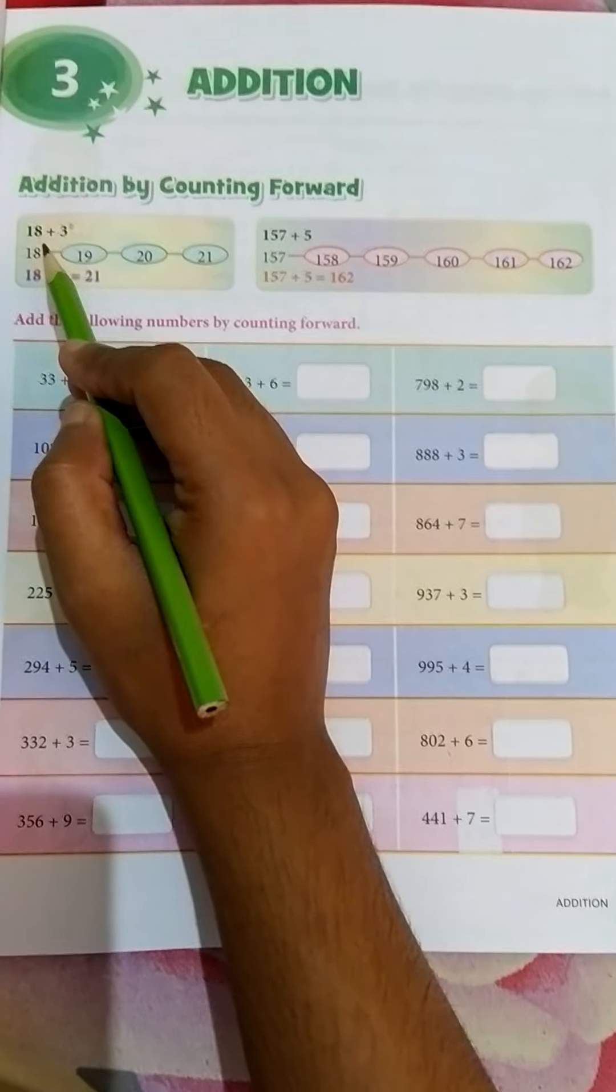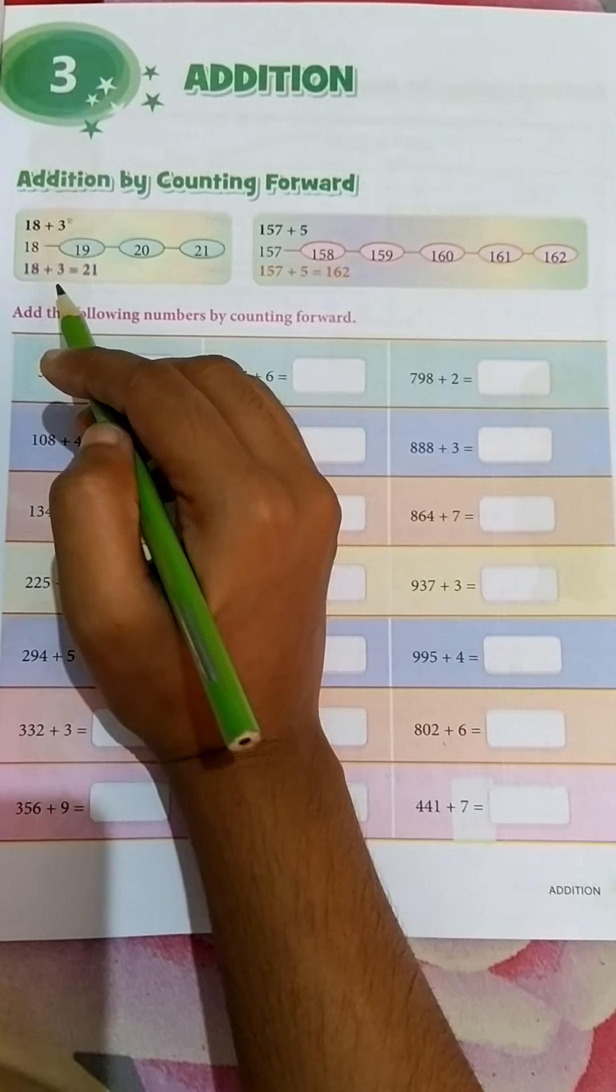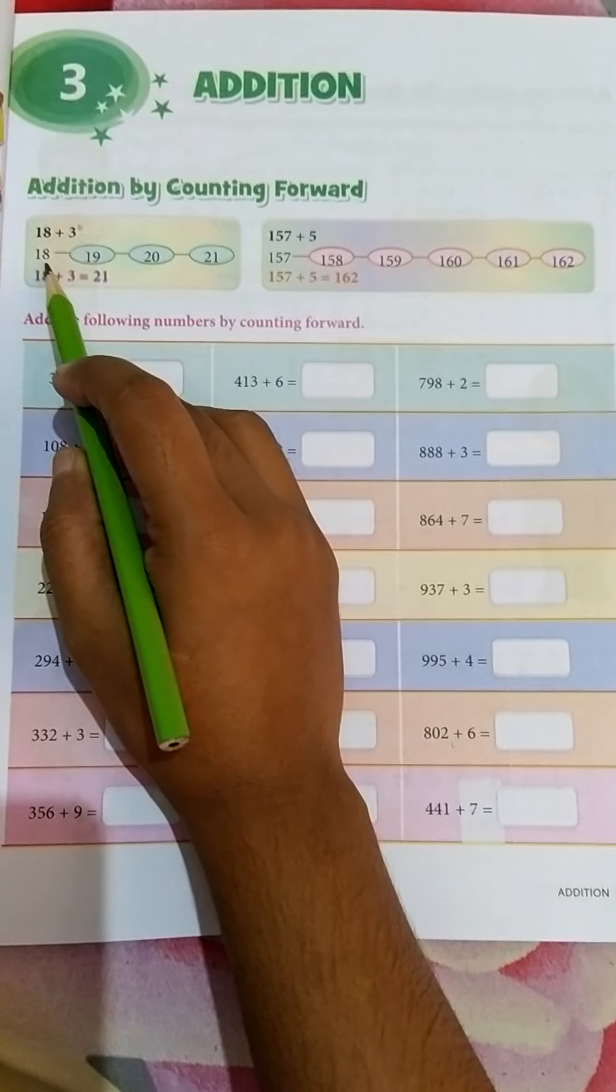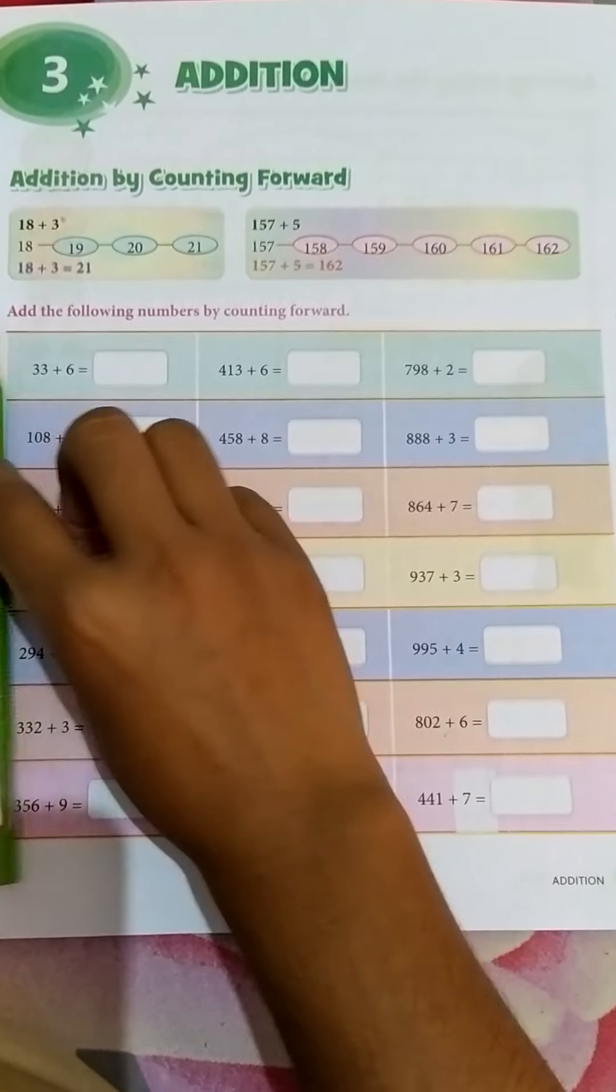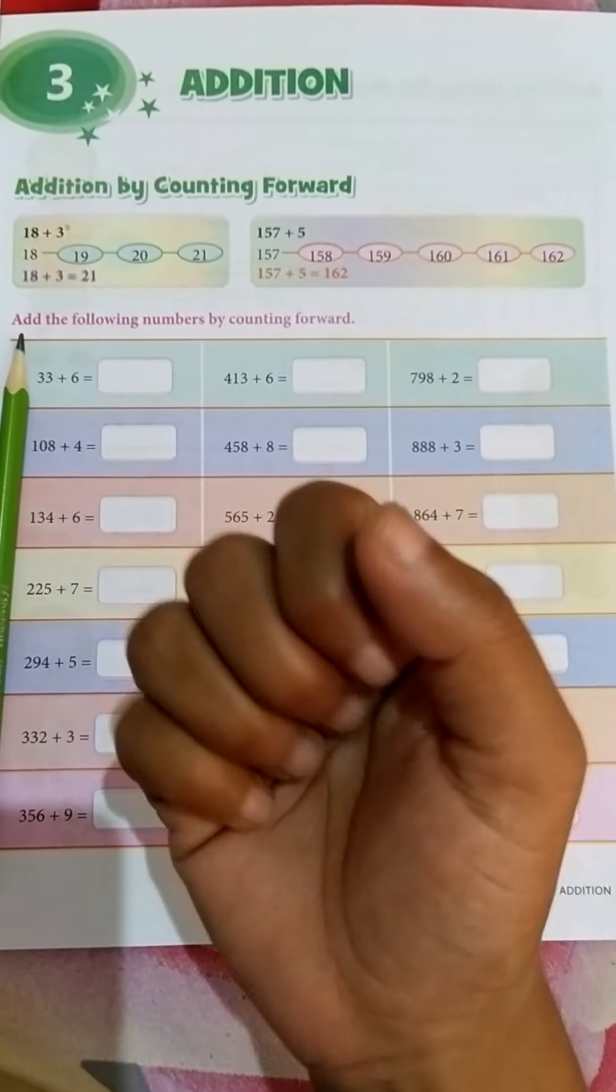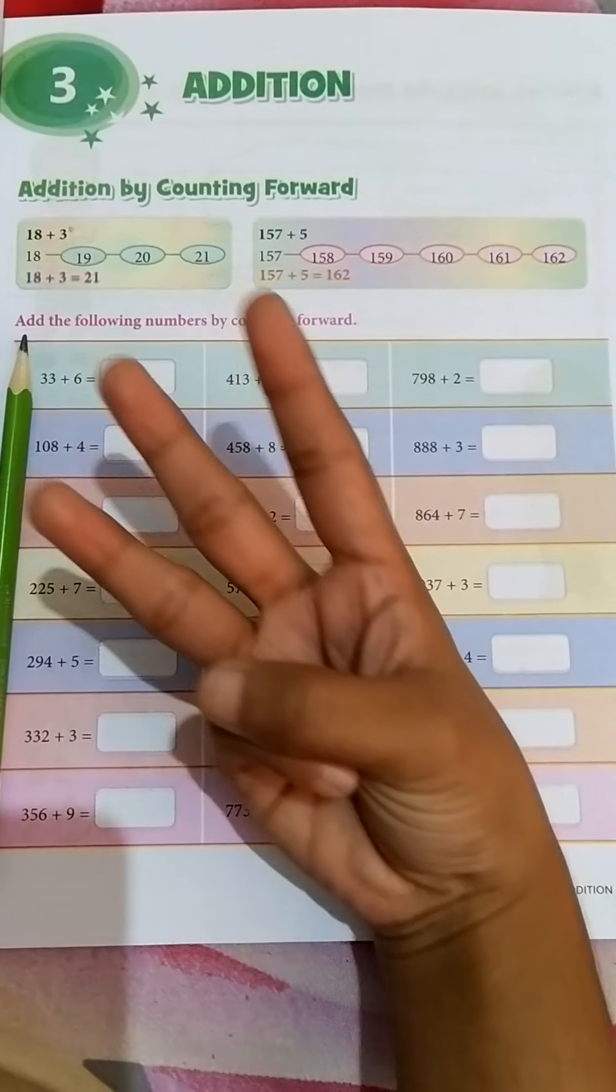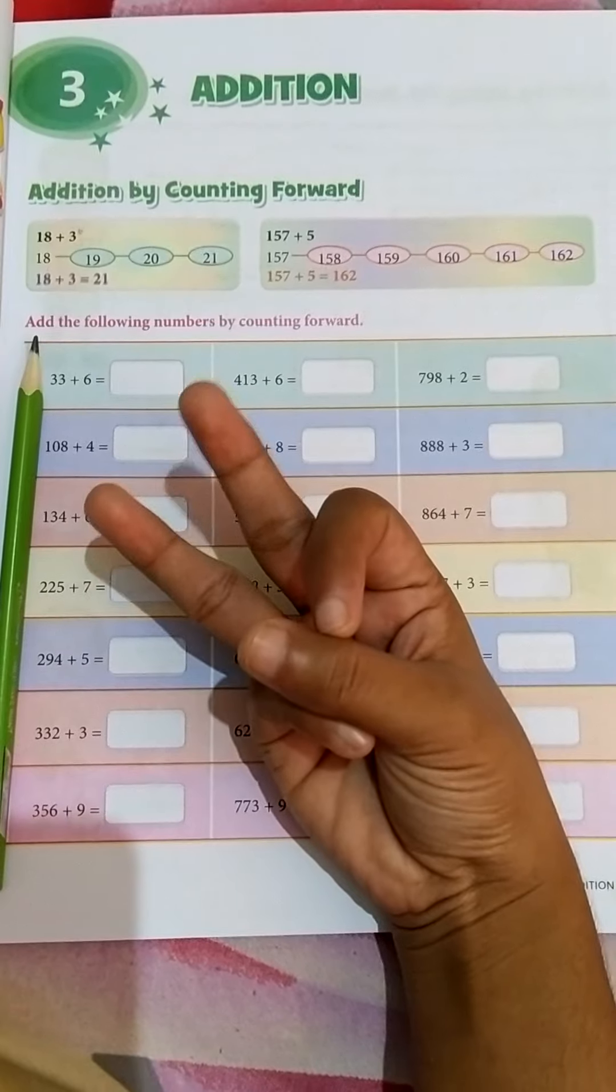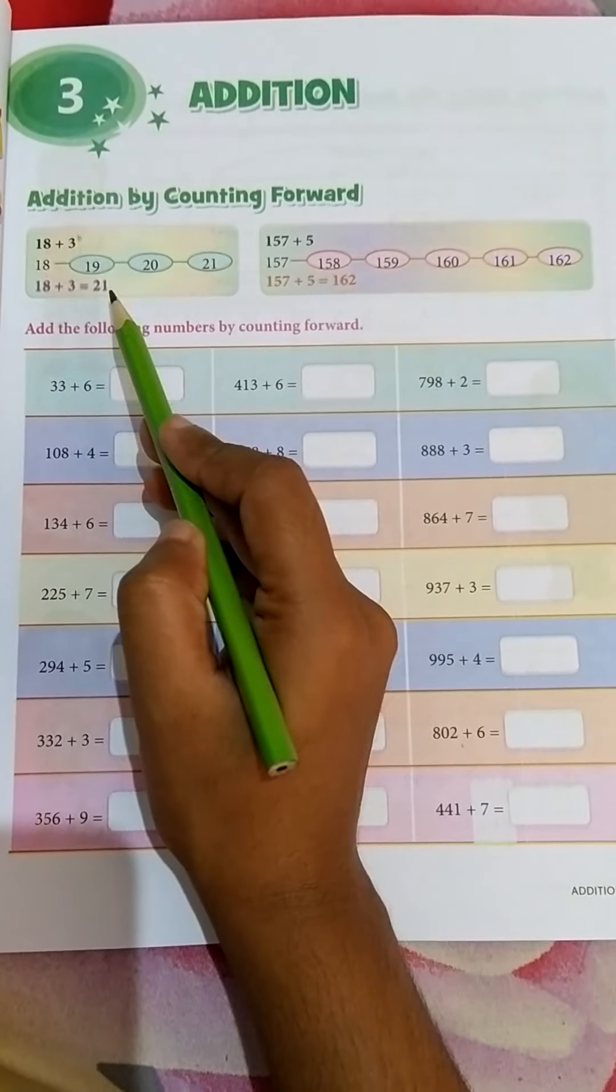How will we add? Here is given 18 plus 3. And how will you add? This is 18. After 18, we will count 3 more on your finger. Take out 3 fingers. Now 18, after 18, you will count 3 more: 18, 19, 20, and 21. What will be answer? 21.